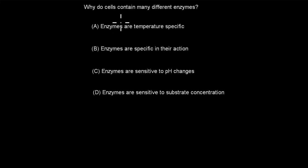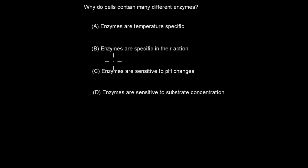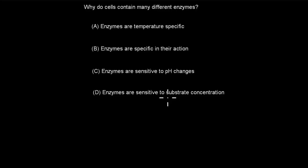The first question is: Why do cells contain many different enzymes? A. Enzymes are temperature specific. B. Enzymes are specific in their action. C. Enzymes are sensitive to pH changes. D. Enzymes are sensitive to substrate concentration. Pause the video and attempt the question.